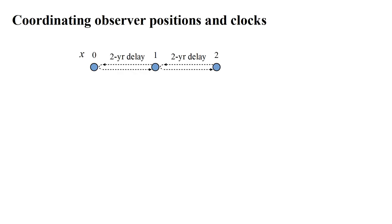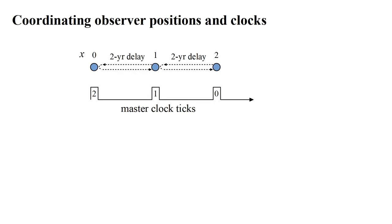We can continue this process to place observers at any desired x coordinate positions. To synchronize the observers' clocks, the origin observer can transmit the ticks of his master clock. After one year, the x equals one observer will receive the t equals zero tick. After two years, the x equals one observer will receive the t equals one tick, and the x equals two observer will receive the t equals zero tick. To synchronize their clocks, each observer adds their distance from the origin to the received master clock tick. The x equals two observer adds two plus zero to get two. The x equals one observer adds one plus one to get two. By synchronizing their local clocks with these results, all their clocks simultaneously have the same reading as the master clock.